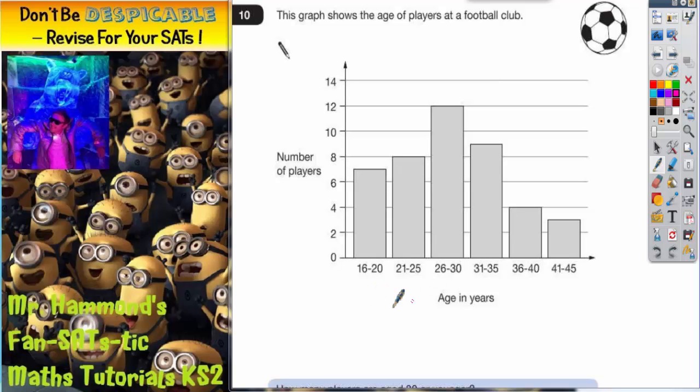So we've got different age groups. We've got 16 to 20 years old, 21 to 25 years old, 26 to 30 years old, 31 to 35 years old, and so on. And we've got the number of players in each group up the side.